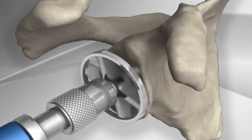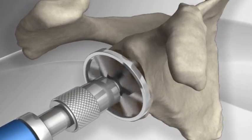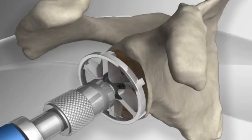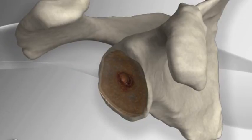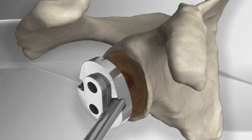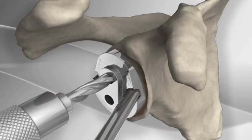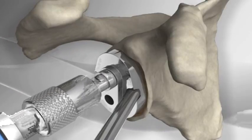A bone cutter is used to smooth the glenoid to fresh bleeding bone. This allows the prosthesis to heal attached to the bone. A second guide is inserted and a hole is drilled above and below the center hole.